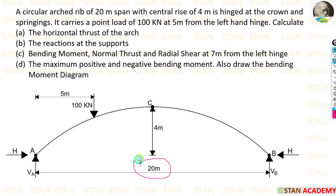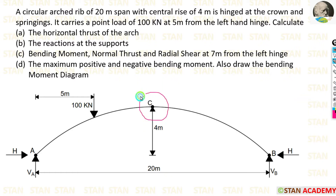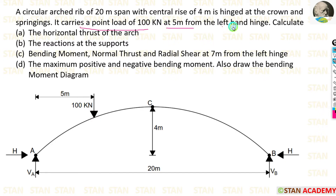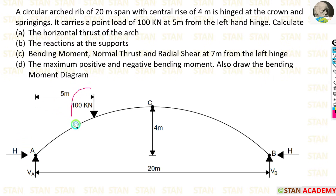The span of the arch is given as 20 meter. The rise is given as 4 meter. It is hinged at the crown and also at the springings. It carries a point load of 100 kN at 5 meter from the left hand hinge. We need to calculate the horizontal thrust of the arch, the reactions at the supports, bending moment, normal thrust and radial shear at 7 meter from the left hinge.